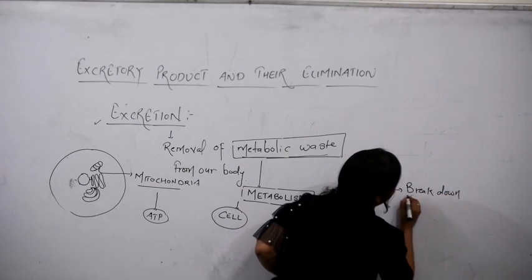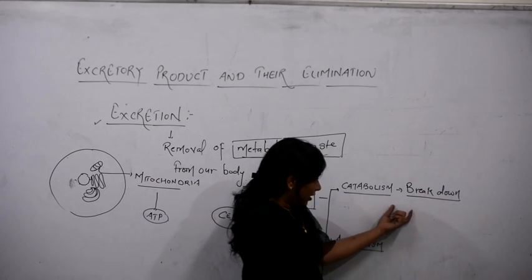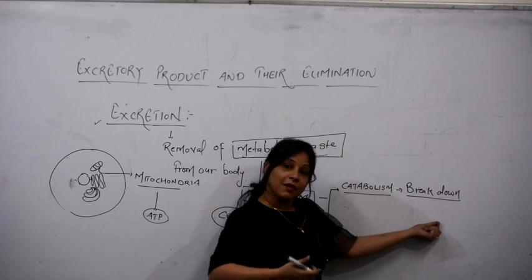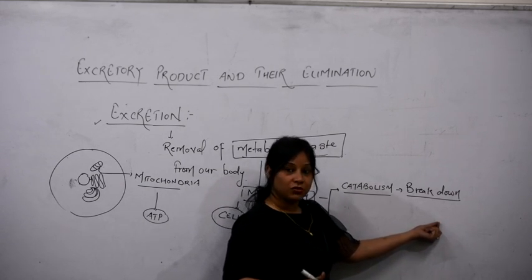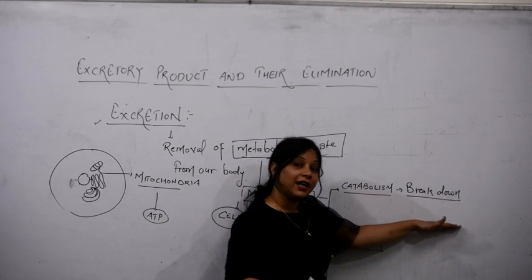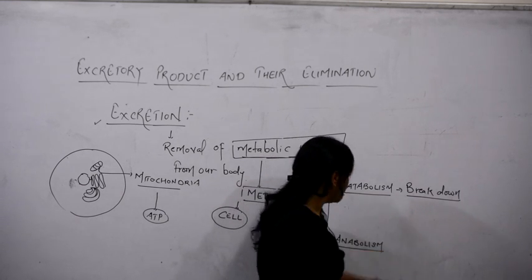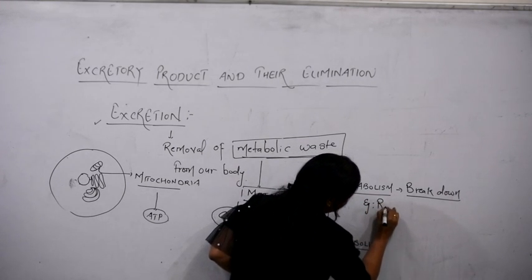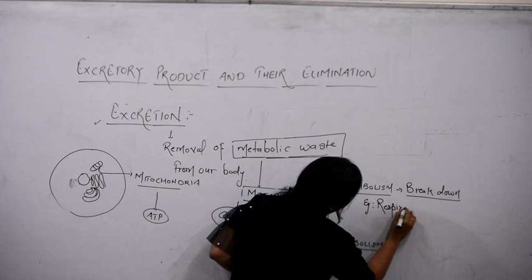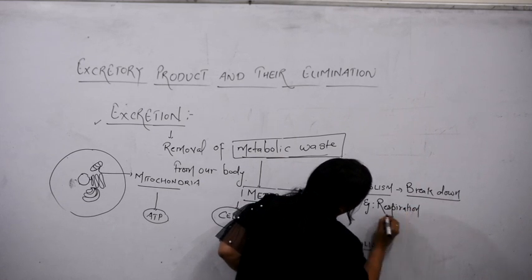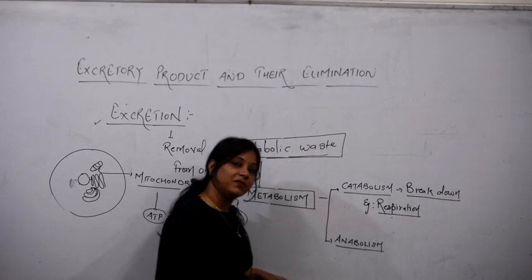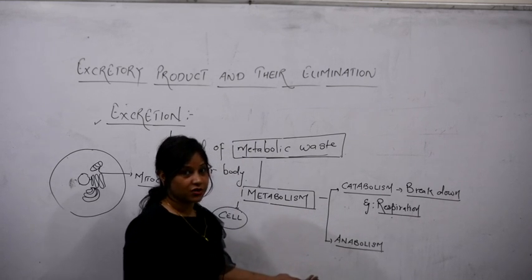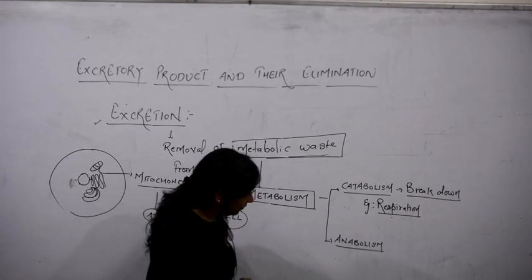Simply, due to the breakdown of any substance, some products are useful and some are useless. The useless products need to be removed from the body. For example, in the process of respiration, we break down glucose. Due to the breakdown of glucose, ATP is formed as well as useless products like carbon dioxide and metabolic water.